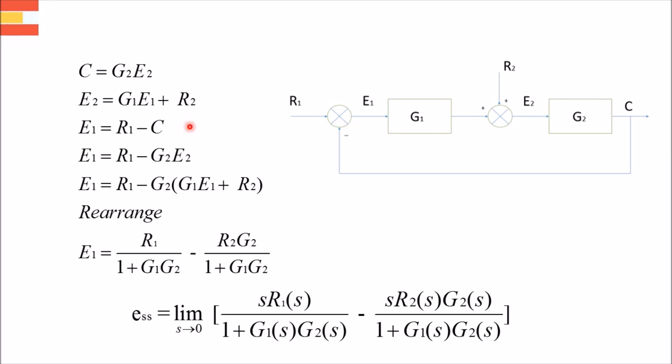Now we have to just replace C with equation number 1 that is G2 into E2, and E2 with equation number 2 that is G1E1 plus R2. Now rearrange it for E1. After rearranging we will get this. This value is in time domain. To get the final value we use final value theorem.